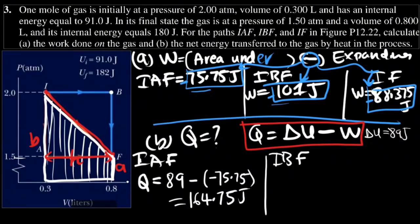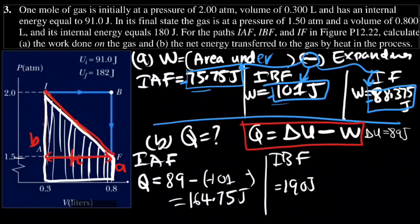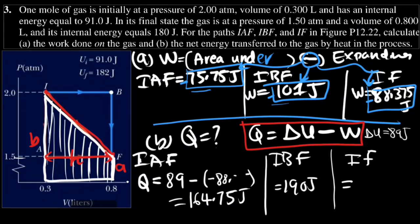For IBF: Q = 89 − (−101) = 190 joules. For IF: Q = 89 − (−88.375) = 177.375 joules. These are the energies transferred to the gas by heat for each path.